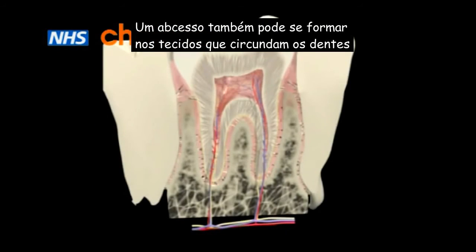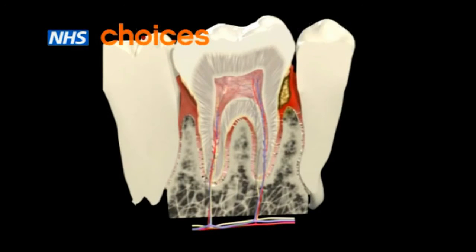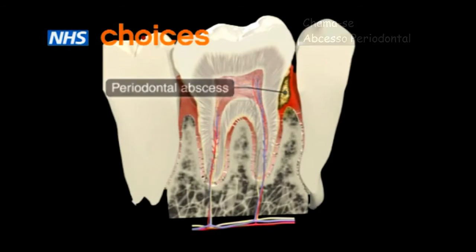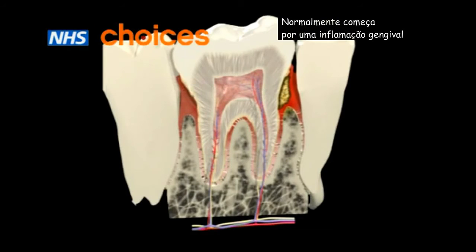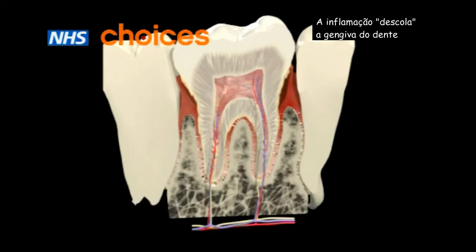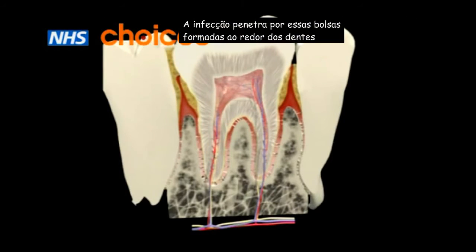Sometimes an abscess occurs in the supporting tissues around the tooth. This is called a periodontal abscess. It is usually associated with gum disease, when the gums become inflamed and separate from the teeth, allowing bacteria to collect in pockets around the tooth root.